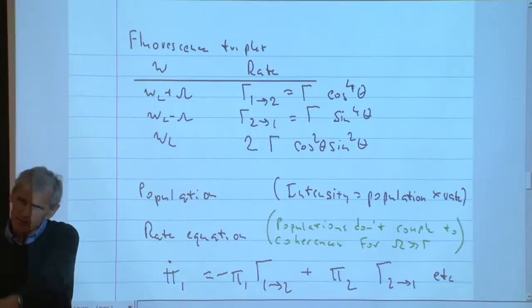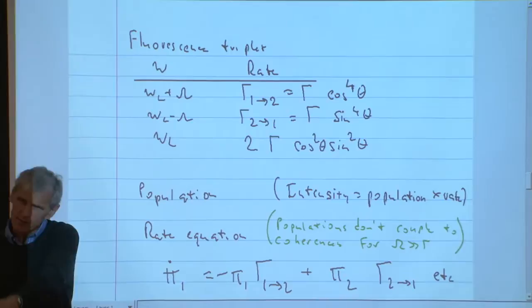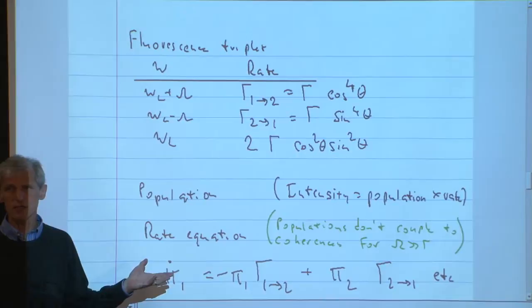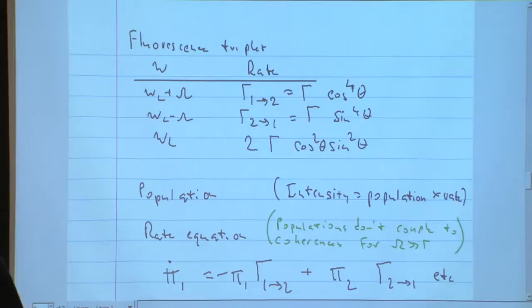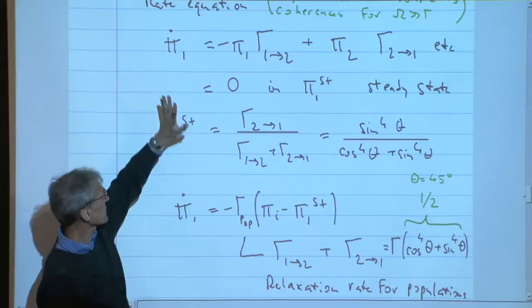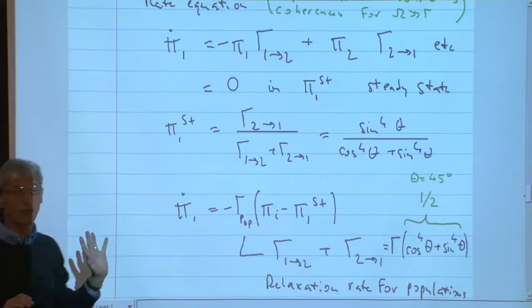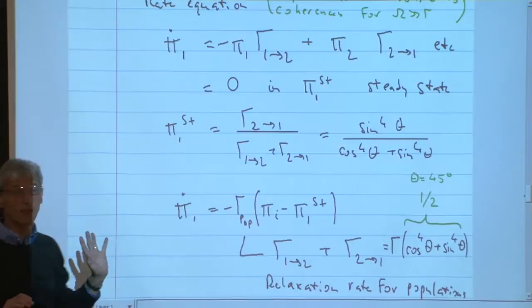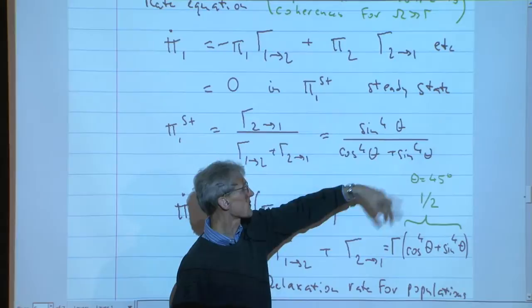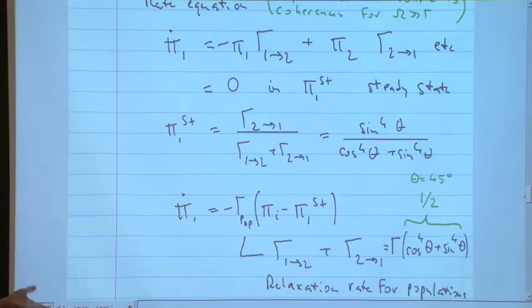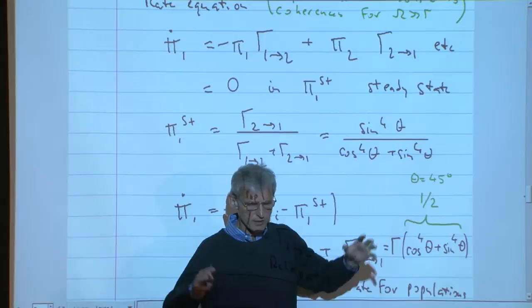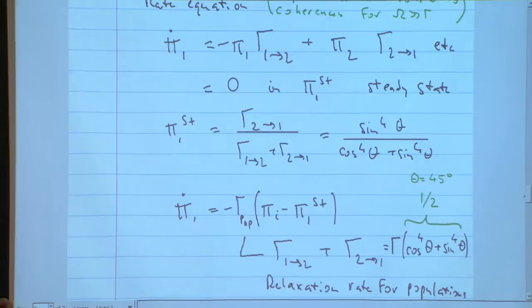You can rewrite the optical Bloch equations not in the bare basis but in the dressed atom basis. In the dressed atom basis, you find a wonderful separation between populations and coherences. We have simple rate equations; by setting the left-hand side to zero, we find the steady-state populations. This will be very important for understanding the light forces. The steady-state solutions are given exactly by the angle theta, which tells us what kind of superposition of the bare states forms the dressed states. In the case of theta equals 45 degrees, the dressed states are just symmetric and antisymmetric superpositions of the naked states.